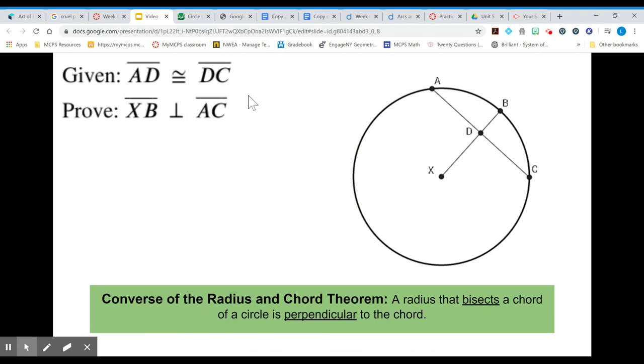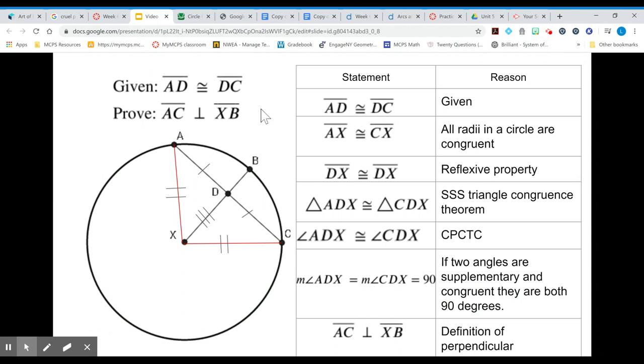Now let's look at the converse. Let's say we don't know that the lines are perpendicular but we know that those two parts of the chord are the same length so this is the proof for that. We're given that AD and DC are congruent to one another.